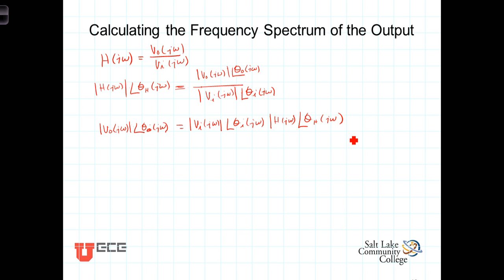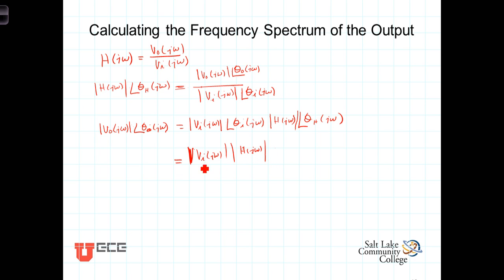We can see how, by representing everything in polar form, this multiplication simply becomes the magnitude of the input times the magnitude of the transfer function. And when multiplying two complex numbers, we add the phases, so the phase of this product is theta sub I of jω plus theta sub H of jω.